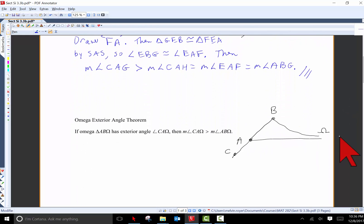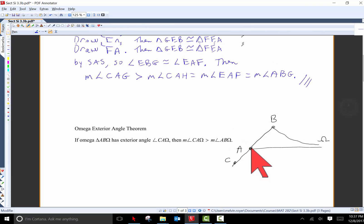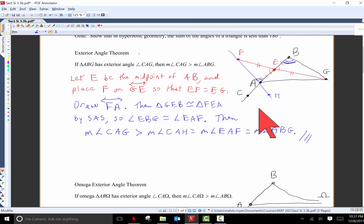Second theorem says that the same thing applies in omega triangles. So here's omega triangle AB omega and here's an exterior angle CA omega and the content of the theorem is CA omega, the exterior angle, is greater than measure of angle AB omega, the interior angle. And the proof for the omega triangle has some properties the same or some methods the same as an exterior angle theorem. It's just more complicated and messier. So that is proved in the book and I'll skip it here.